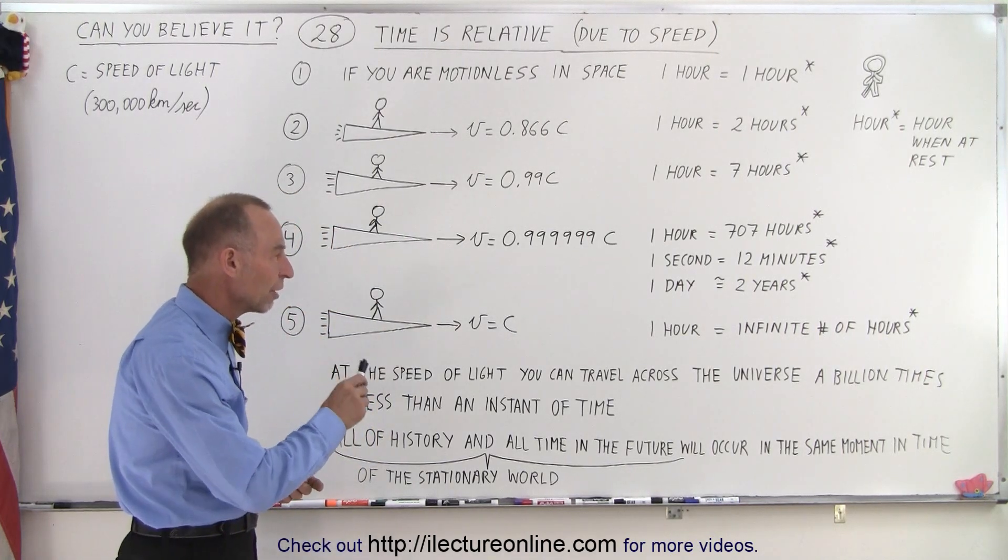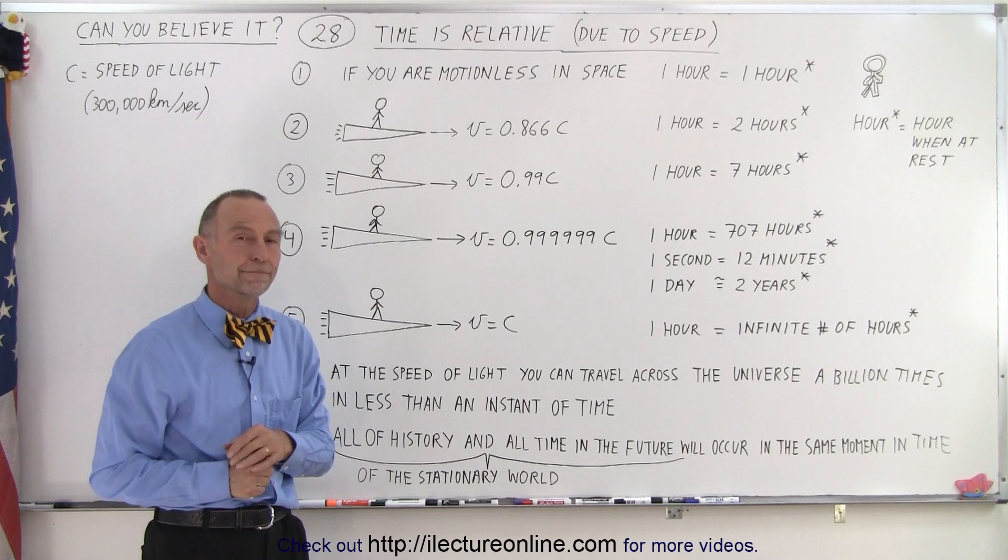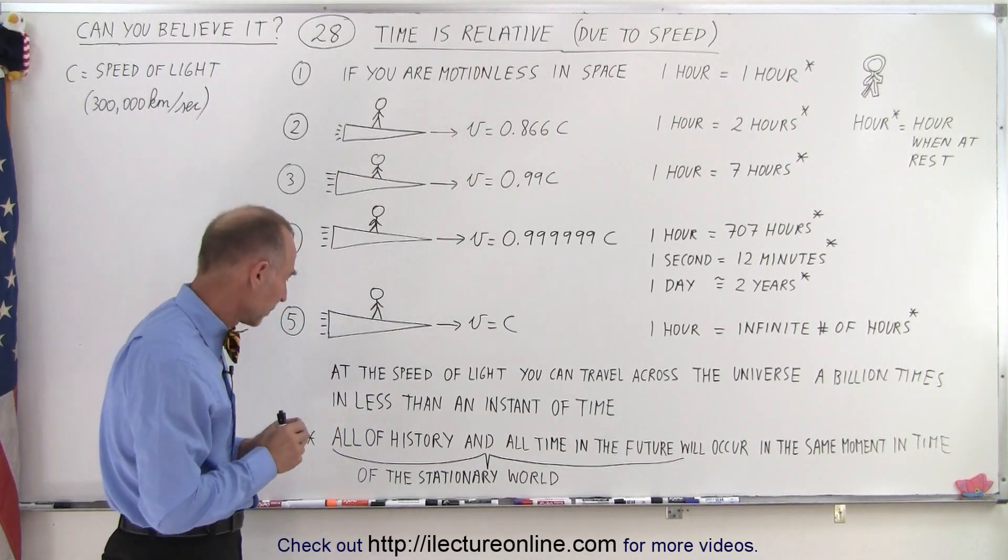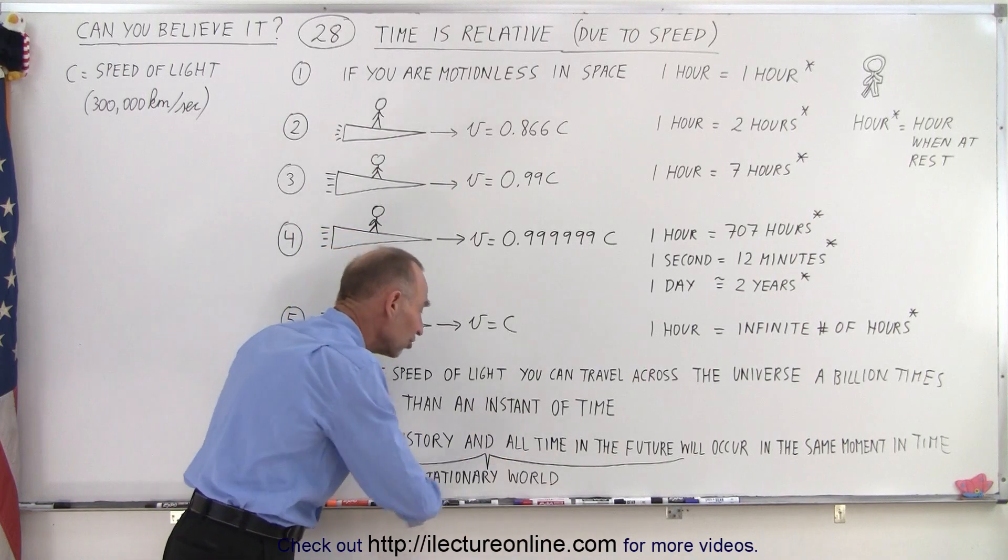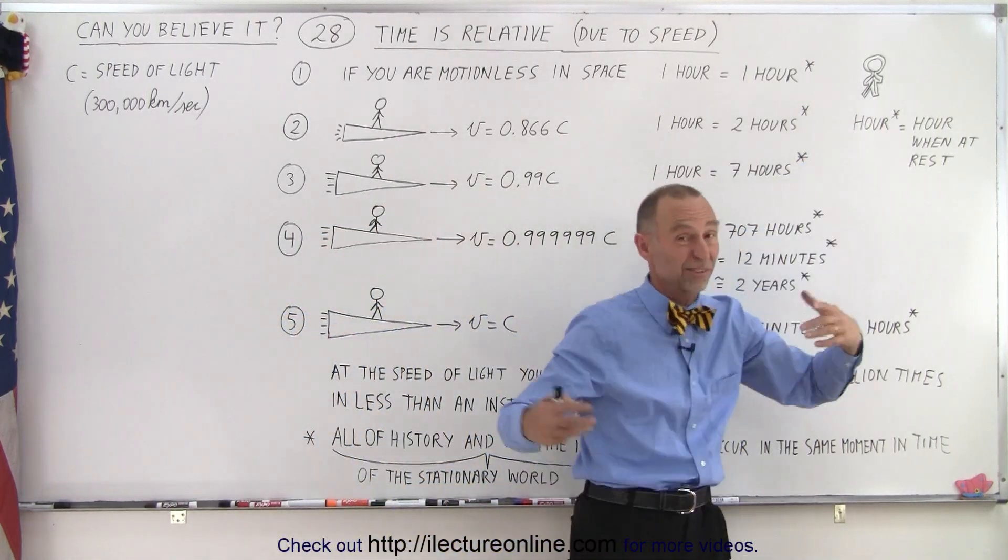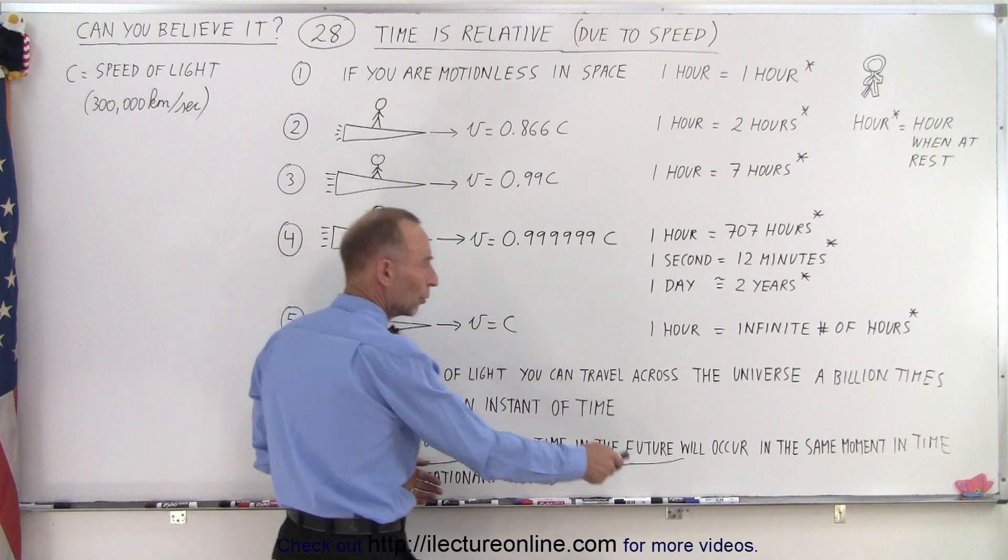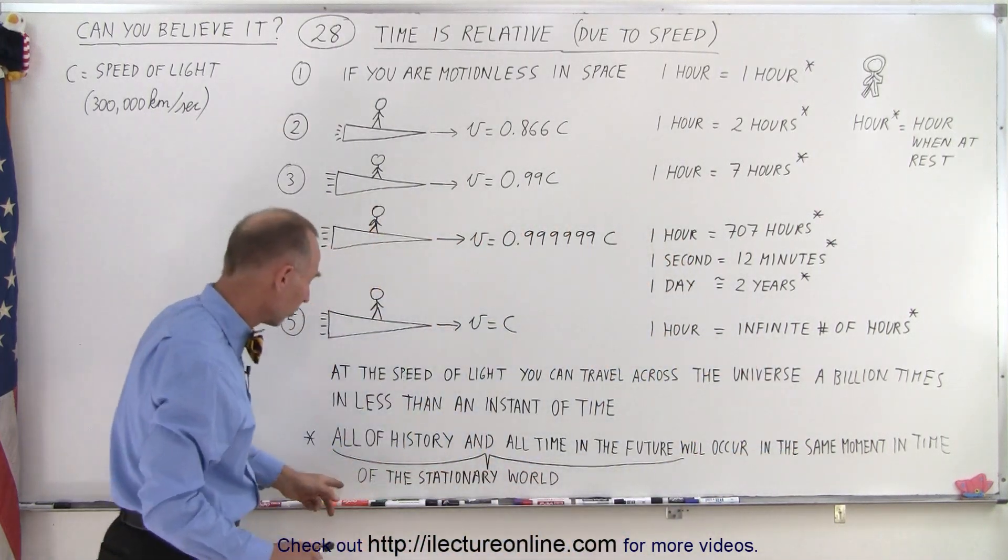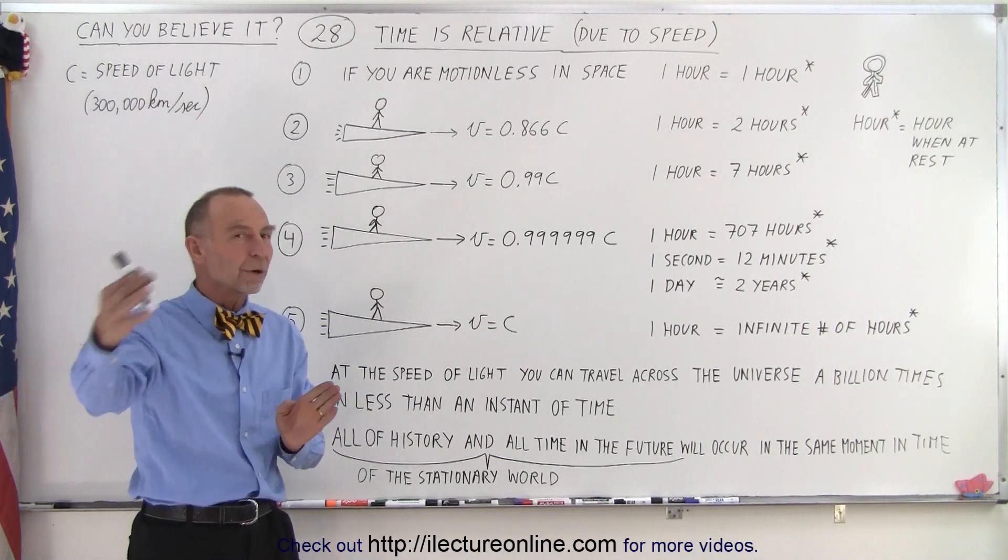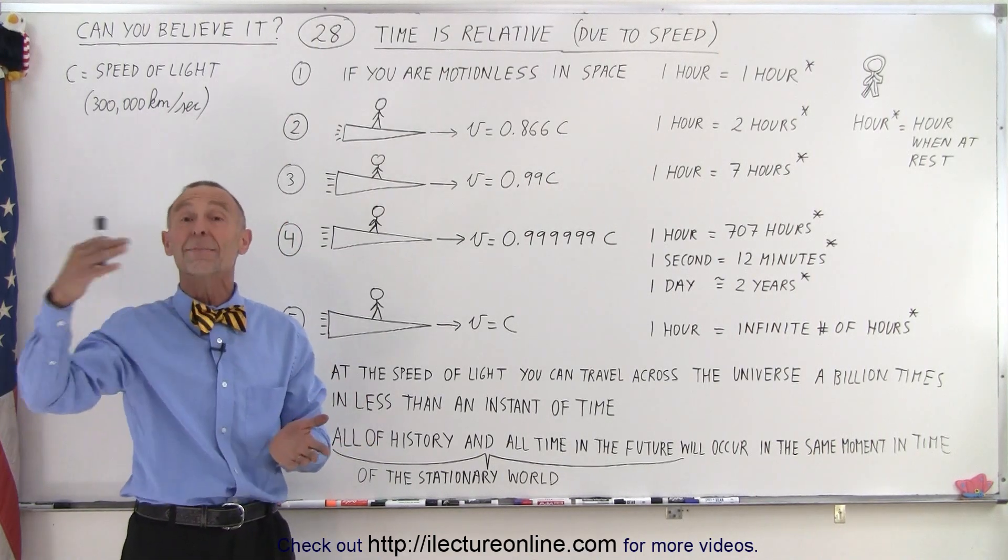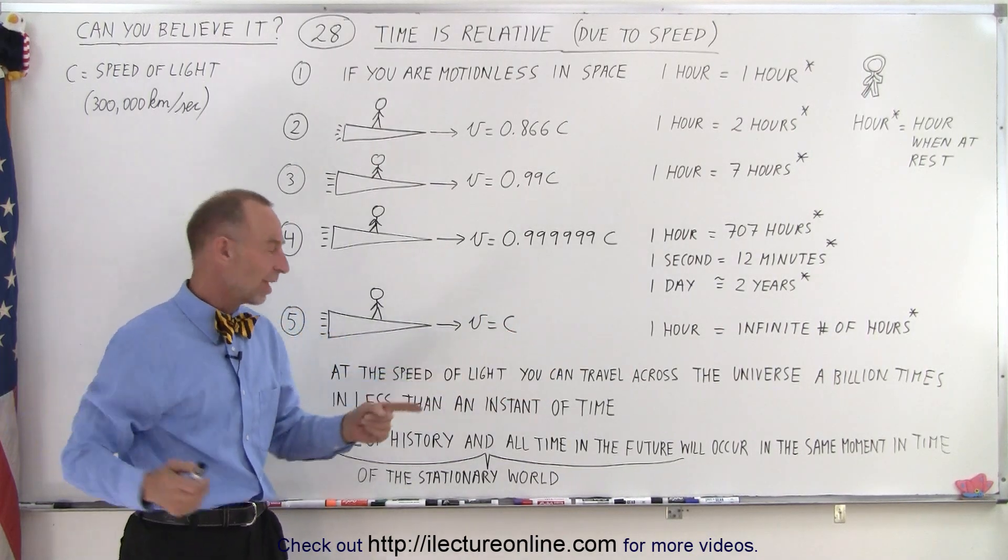At the speed of light, you can travel across the universe a billion times back and forth in less than an instant of time. And then if you even think about it even further, all of history in the past and all of time in the future for the stationary world, for the world that this person lives in, it's essentially the world that we live in. All the past and all the future and the present will occur in the same moment in time for a person moving at the speed of light.